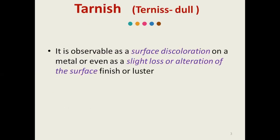Starting with tarnish and corrosion — what is tarnish? Tarnish came from the French word 'ternir,' meaning dull. Tarnish is observable as a surface discoloration on a metal, or even as a slight loss or alteration of the surface finish or luster.